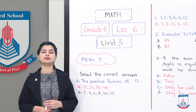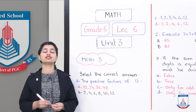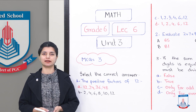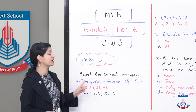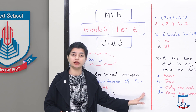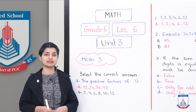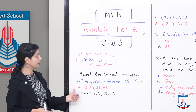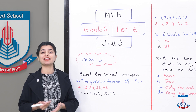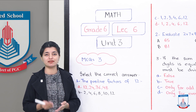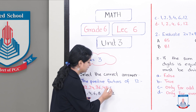In a multiple choice question, as you know, there are many options and we have to select the best option. Looking at our MCQs for chapter number 3 — the positive factors of 12 are... we have to list the factors of 12. The first option is 24, 12, 36, 48. The problem is that these are not factors; these are multiples of 12. So this option is completely cancelled.